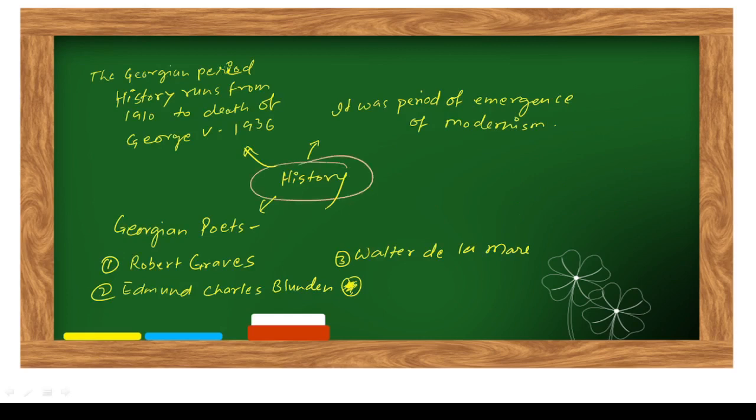If we talk about the history and the history point of view, the Georgian period history runs from 1910 to the death of George V, and it was the year 1936. So from 1910 to 1936, this was the time period in history. It was period of emergence of modernism. Modernism was starting at that point of time.